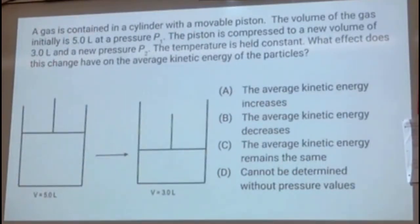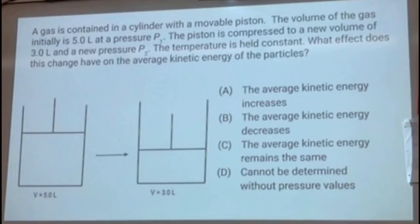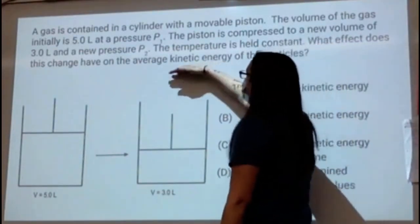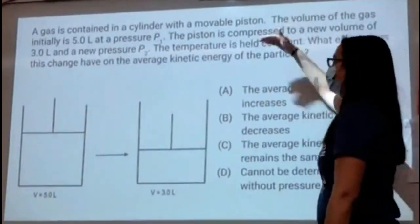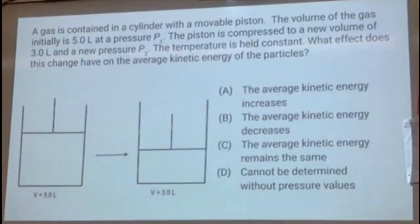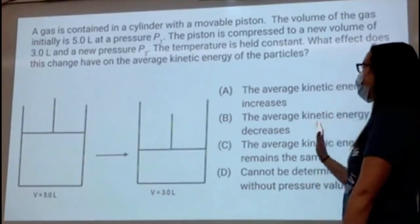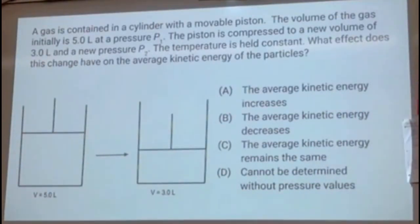The last question involves a movable piston: gas initially at 5 liters is compressed to 3 liters at constant temperature. What happens to average kinetic energy? Average kinetic energy is measured by temperature — it's the only thing that measures it. If temperature is held constant, average kinetic energy stays the same. You will always see at least one question like this on the test.